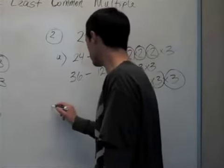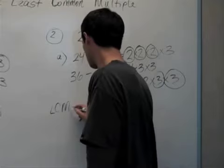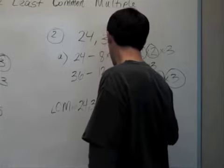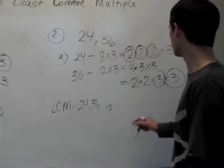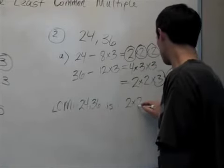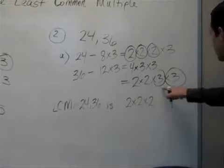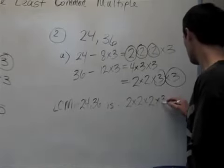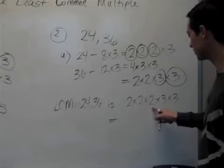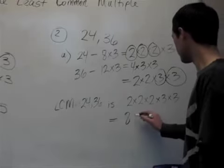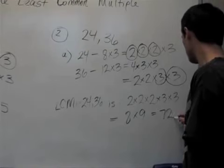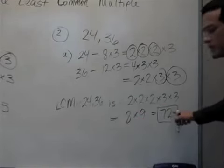So now our least common multiple of 24 and 36 is 2 times 2 times 2 times 3 times 3. And that's equal to 2 times 2 times 2 is 8. 3 times 3 is 9. So 8 times 9 is 72. The least common multiple of 24 and 36 is 72.